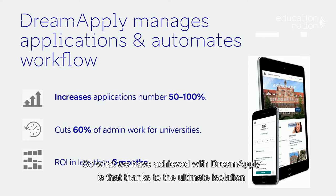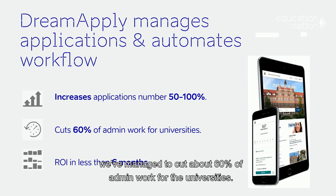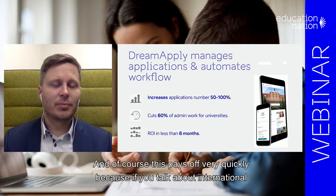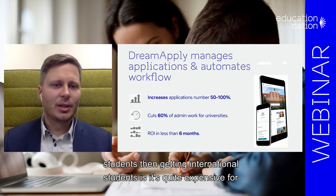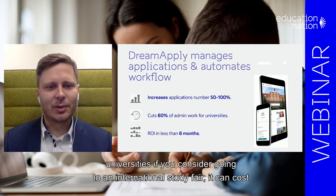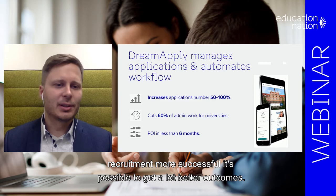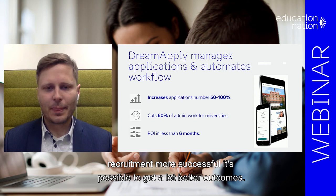What we have achieved with DreamApply is that, thanks to automation, we've managed to cut about 60% of the admin work for universities and increase the international candidate numbers between 50 to 100%. And this pays off very quickly, because if you talk about international students, getting them is quite expensive for universities. Going to an international study fair can cost easily 10,000 euros, and with tools that help make recruitment more successful, it's possible to get a lot better outcomes.